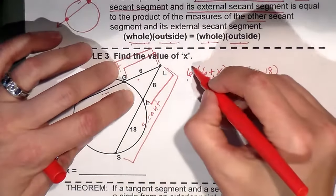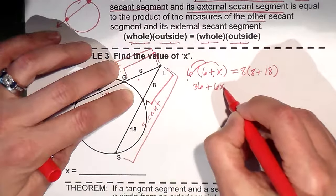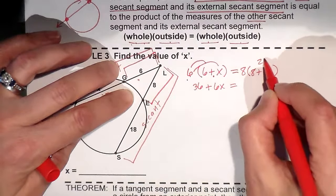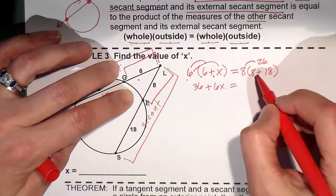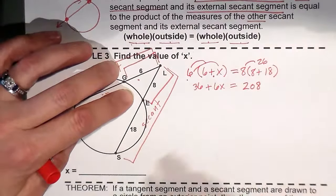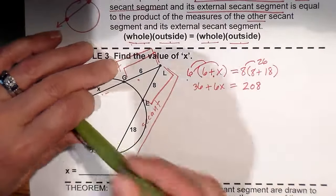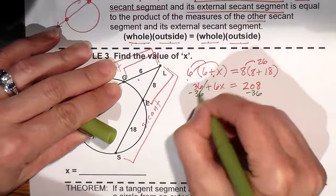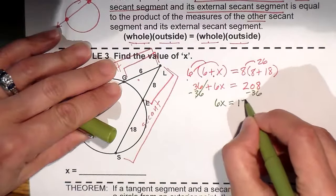So let's work this out. Distribute: six times six is thirty-six, six times x is 6x. I'm going to combine this eight times eighteen, eight plus eighteen. That's twenty-six. So eight times twenty-six is one sixty and forty-eight which is two oh eight. So now I'm going to solve for x. So let's solve for x. Let's do that.